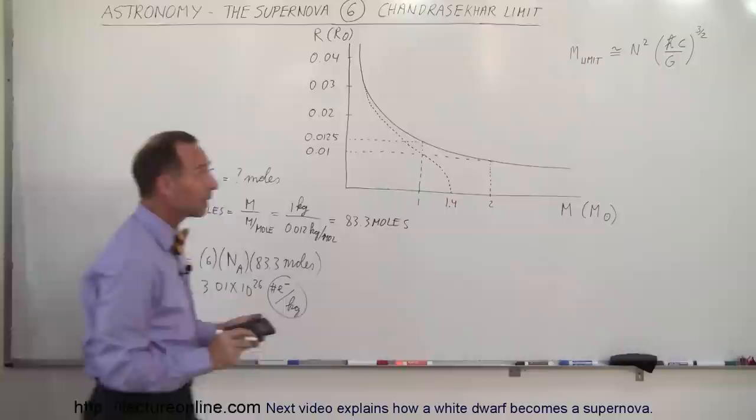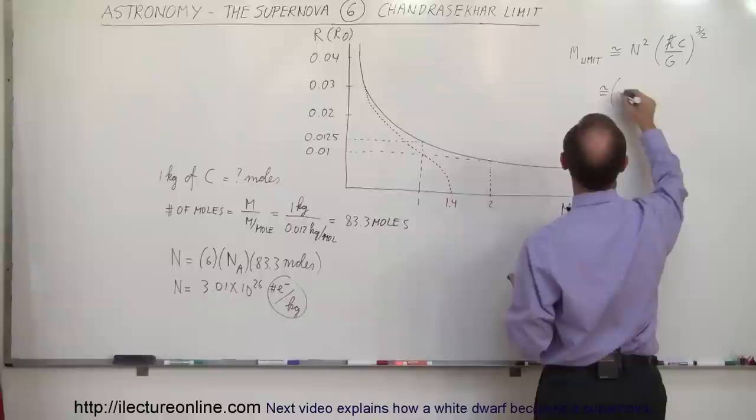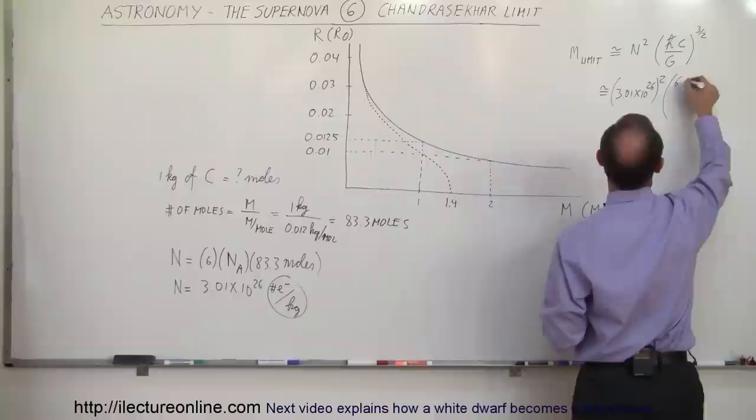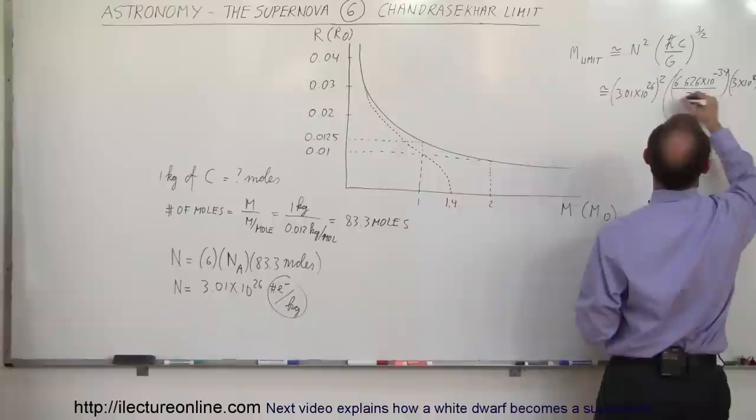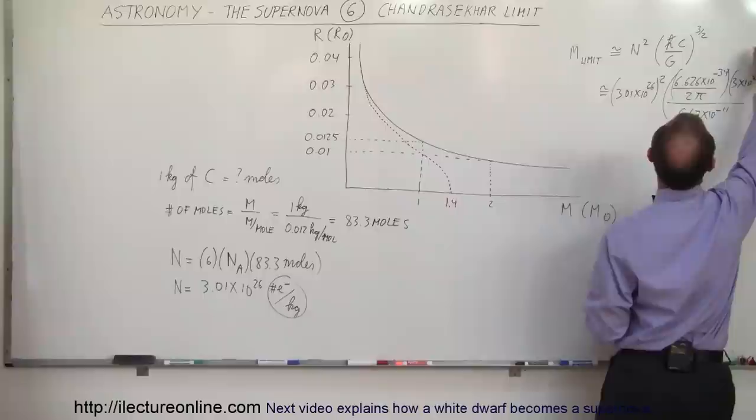If we then plug that into the equation, this would be equal to approximately 3.01 times 10 to the 26th squared. H would be 6.626 times 10 to the minus 34 divided by 2π. We multiply times the speed of light, 3 times 10 to the 8, and divide by G, which is 6.67 times 10 to the minus 11, and take the whole thing and raise it to 3 halves power.